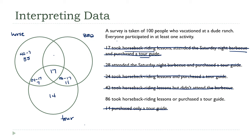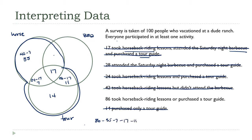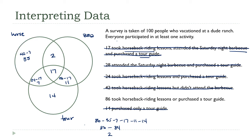Now returning to the horseback riding or tour guide clue: all of those regions together must add up to 86. So that's 86 minus 35 minus 7 minus 17 minus 7 minus 11 minus 14, which gives us 86 minus 84, equaling 2. So the missing region is 2.